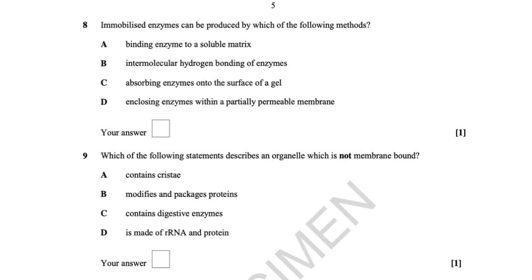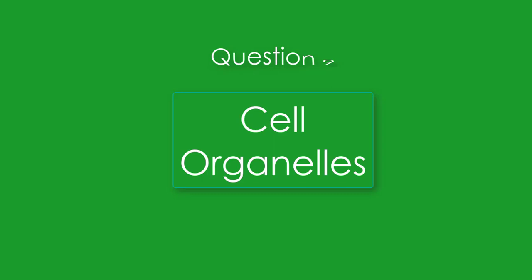Immobilised enzymes can be produced by which method? Binding onto a soluble matrix would not immobilise it. Intermolecular hydrogen bonding of enzymes is not a valid method. Absorbing enzymes onto the surface of a gel — the word should be 'adsorbing' not 'absorbing' — would not work either. Enclosing the enzymes within a partially permeable membrane would definitely work. The answer is D.